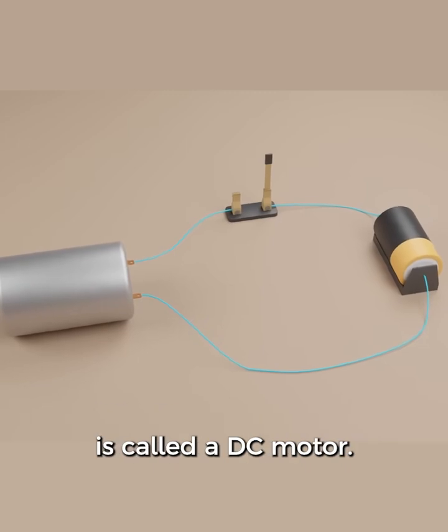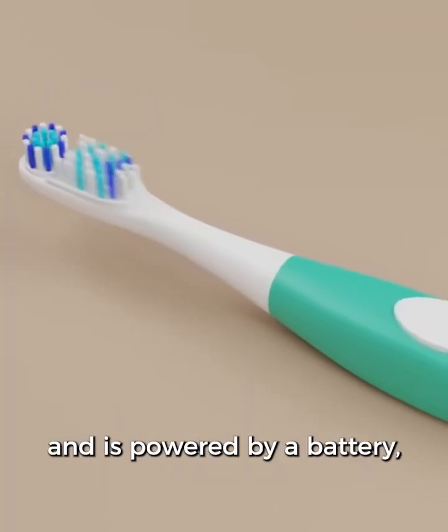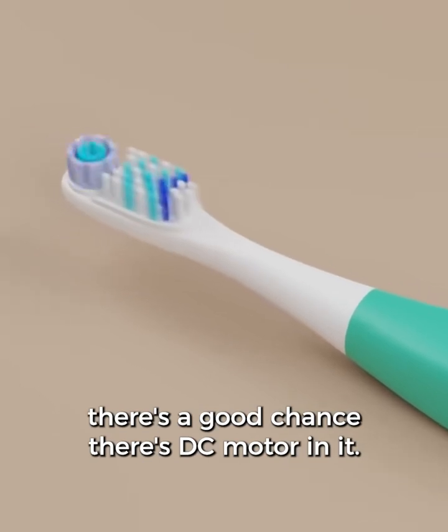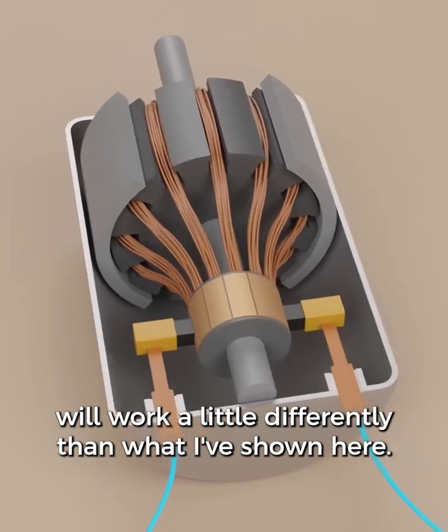What I've shown you in this video is called a DC motor. If you have a device that moves and is powered by a battery, there's a good chance there's a DC motor in it. Other types of electric motors will work a little differently than what I've shown here.